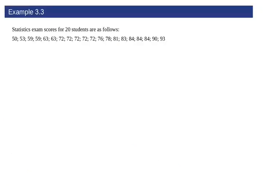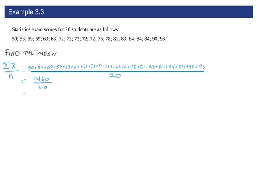Let's try this out for example 3.3. Here we have some exam scores for 20 students. Let's find the mean. We're going to add all of the values up and divide by how many there are. There's 20 exam scores, so we're going to divide by 20. We're going to get 73, and we see that is roughly about in the middle, about half below and about half above. So 73 is a pretty good measure of center.